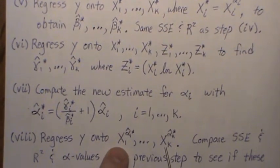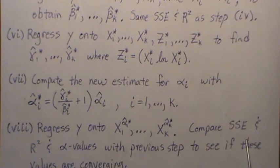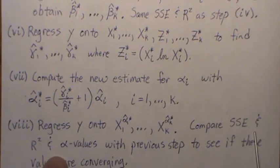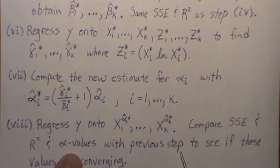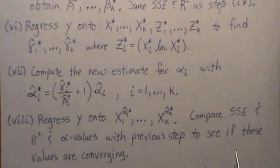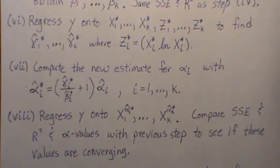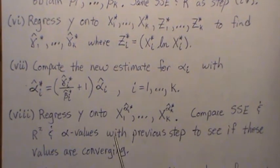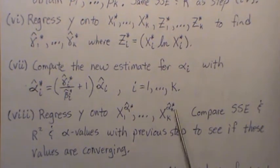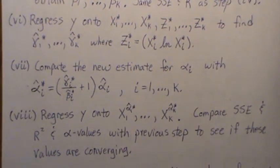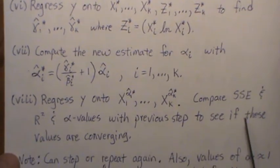Now we regress y onto our original regressor variables raised to those powers, and then we compare the sum squared error and R-squared, and actually the alpha values with previous steps - maybe I put in parentheses an 's' there - to see if these values are converging or are they stabilizing, might be a better word. And that's the goal. So if sum squared errors are sort of stabilized and R-squared or the alpha values are all stabilizing or converging, however you want to think about it, then you stop and then that's your model.